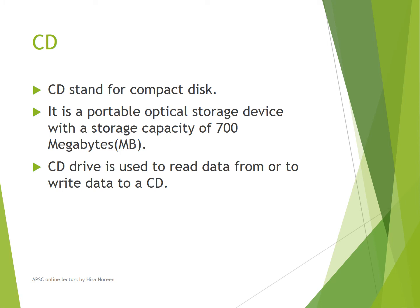CD — a compact disk — is used to store data. It has a round shape and a magnetic surface to store data, and it is a portable storage device, meaning you can carry it from one place to another. Its storage capacity is 700 megabytes, which is much lower compared to other storage devices like hard disk and DVD. A CD drive is used to read data from or write data to a CD. You can insert the CD in the CD drive and then read or write data on it.